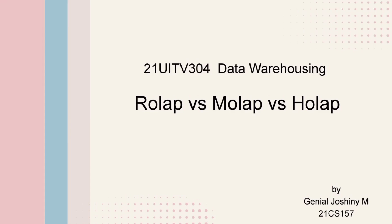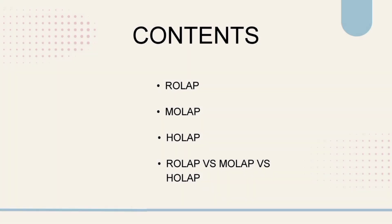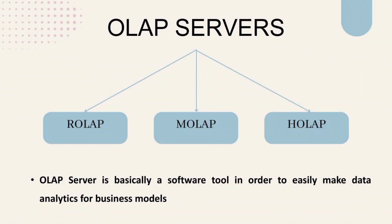My topic is differentiation between the OLAP servers. In this class we are going to discuss the topics of relational OLAP, multidimensional OLAP, and hybrid OLAP, and then we will discuss the differentiation between them. OLAP servers contain three major types: relational OLAP, multidimensional OLAP, and hybrid OLAP.